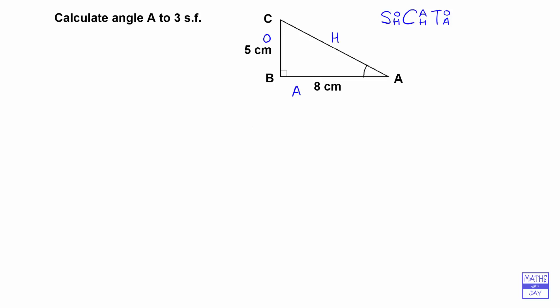So then we decide which of the trig ratios we want to use by seeing which two sides are involved. We've got the adjacent side and the opposite side, so we're looking at using tan. Tangent is opposite over adjacent, so we know that the tangent of angle A is equal to the opposite, which is 5, over 8.